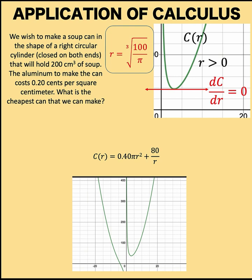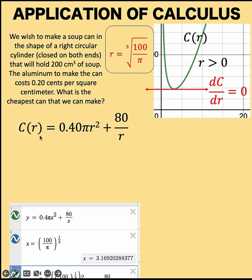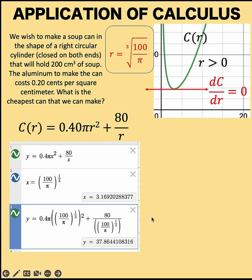Now let's recall our original cost function: C(r) = 0.40πr² + 80/r. Let's substitute this value for r into the cost function. Using Desmos graphing calculator, here are the results.